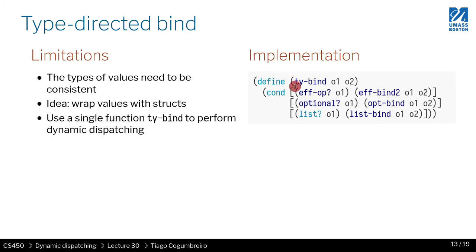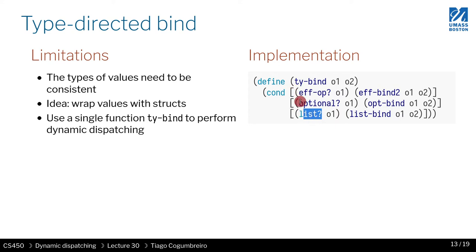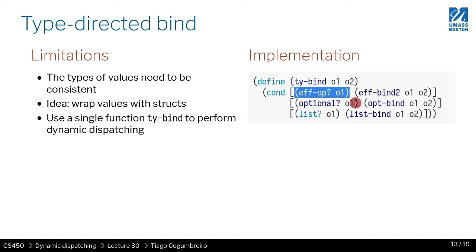We could define a more generic bind where we hard-code the possibilities: if the argument is an eff operator, do something; if it's an optional, do something else; if it's a list, do something else. However, this has a few limitations. First, if I want to add a new operation I need to change my bind operator, which might be problematic if the code is already shipped — it's not extendable. Additionally, in Racket you don't really know the type of a function, so you would have to add a struct to wrap the effectful operation.